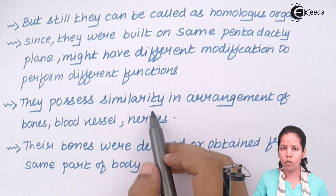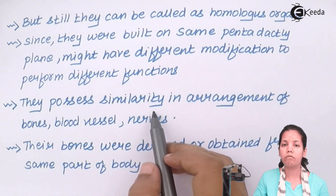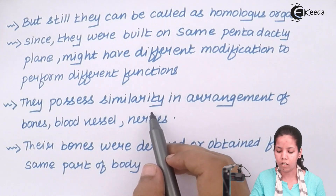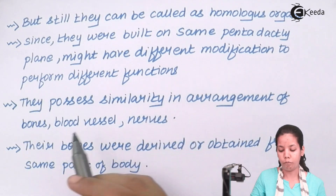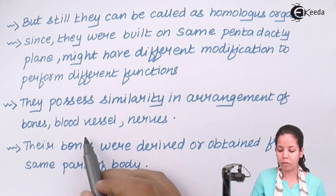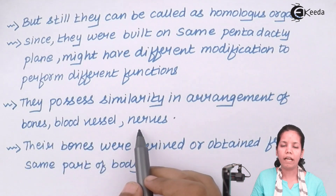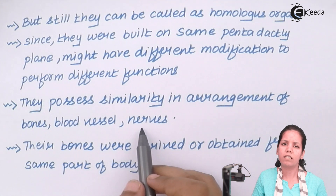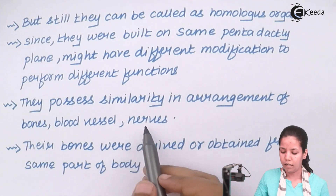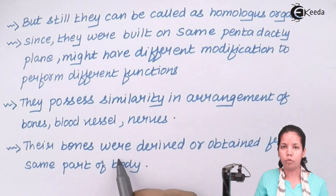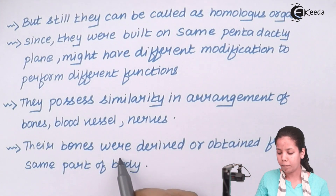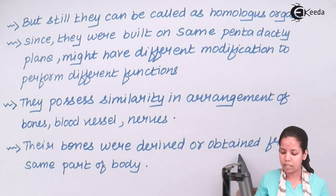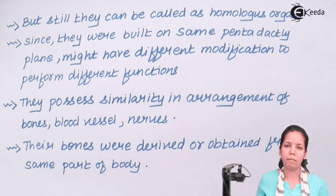Also, these forelimbs had certain other similarities in terms of the arrangement of tissues or cells. For example, the arrangement of bones, blood vessels, and nerves which transmit impulses or signals throughout them by connecting the brain as well as the motor neurons or effector neurons. The bones present in their forelimbs were derived or obtained from the same part of the body, which was quite a significant similarity.